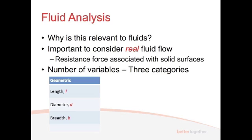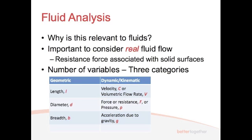Relatively simple to determine. We've got dynamic or kinematic variables. Obviously the dynamic is moving, so we've got velocity, and obviously velocity is related to volumetric flow rate. Can you all tell me what the relationship is? V dot equals AC, yeah? We've got force or resistance, F, and obviously that's related to pressure. Pressure is force divided by area, so they're related to each other. And we've also got acceleration due to gravity, G. We all know that.